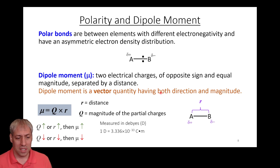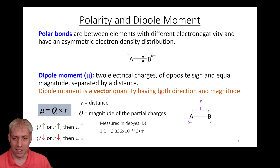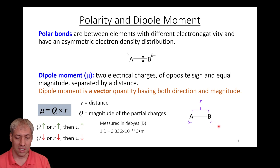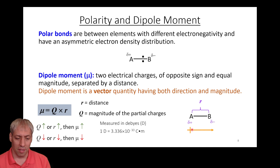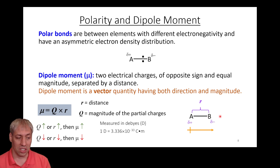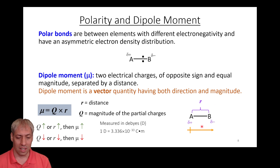One thing to note about dipole moments is that it's a vector — it has directionality. It's not just a number; it's a number plus a direction. We draw an arrow going from the positive side to the negative side because that's the direction the electrons are flowing. This is common notation when describing a dipole moment: the arrow has a little plus sign on the tail going toward the negative side, describing both the directionality and magnitude of the dipole moment of a bond.